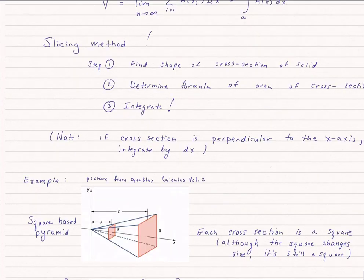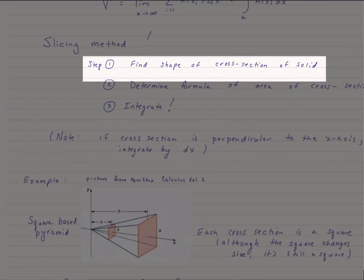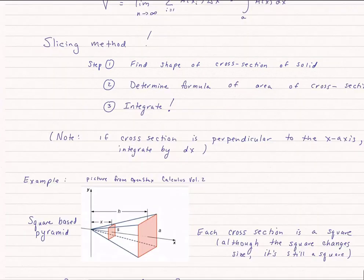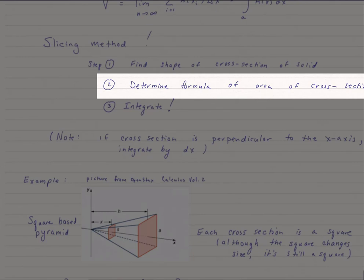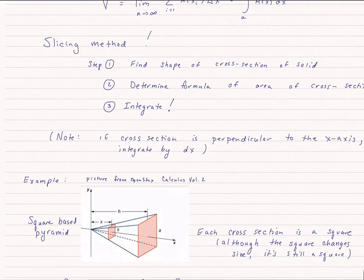So let's do this example. It's a square-based pyramid, and the reason why we're picking this is one that we already know the volume of. So each cross-section is a square. So that's step one. We figured out the shape of the cross-sectional area. However, unlike the case of the cylinder, the shape of the square is changing depending where we are in the pyramid.